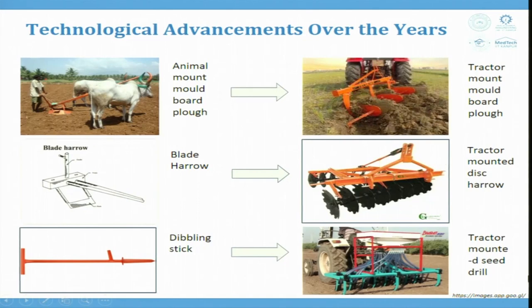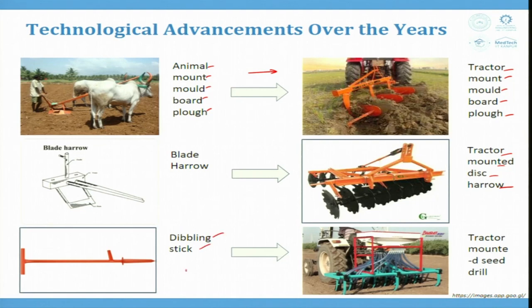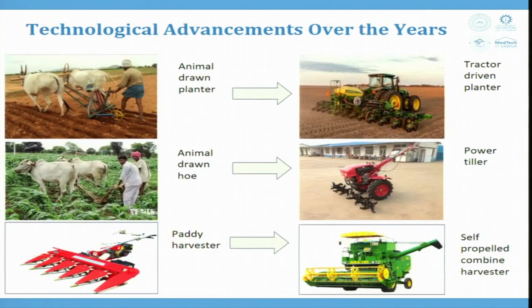Technological advancement over the years progressed from animal-mounted moldboard plows to tractor-mounted moldboard plows, representing mechanization of the system. Blade harrows for land preparation evolved into tractor-mounted disk harrows. The dibbling stick was replaced by tractor-mounted seed drills. These advancements came into existence around 1975.